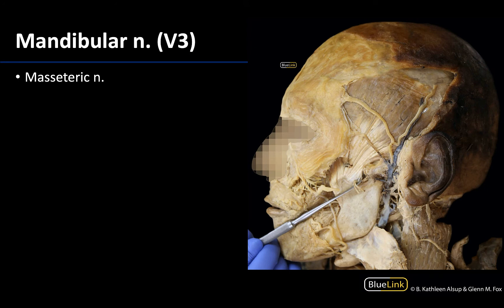Both of these branches — both the masseteric nerve as well as the deep temporal nerves — will both be branches of the anterior trunk of V3, or the mandibular nerve. We can see them a little bit easier in different regions, which is why we have two separate pictures here.